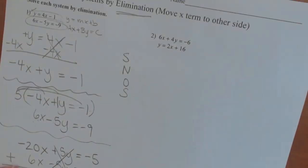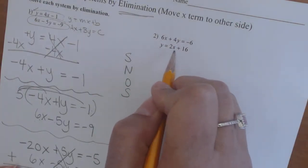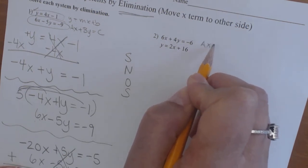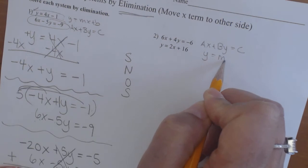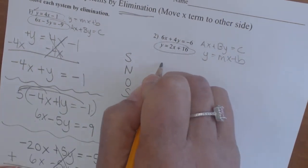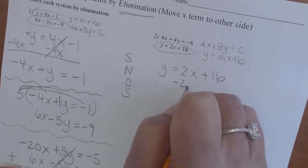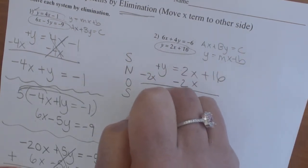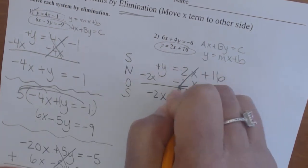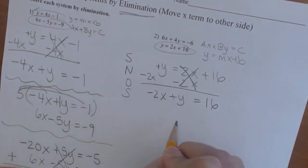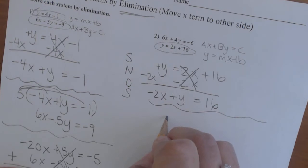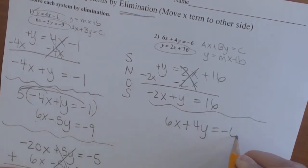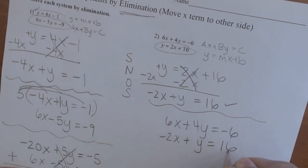Let's try number 2. The equations are 6x plus 4y equals negative 6, and y equals 2x plus 16. The first is in ax plus by equals c form; the second is in slope-intercept form. So I have to move that x term over. Since 2x is positive, I subtract it from both sides, giving: negative 2x plus y equals 16. I draw a line and write the standard-form equation on top: 6x plus 4y equals negative 6, then the converted equation below with a 1 in front of the x.